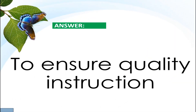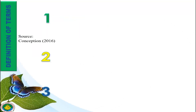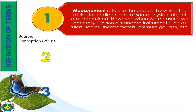For better understanding, let's use some terminologies. Measurement refers to the process by which the attributes or dimensions of some physical object are determined. When we measure, we generally use some standard instruments such as rulers, scales, thermometers, pressure gauges, etc.